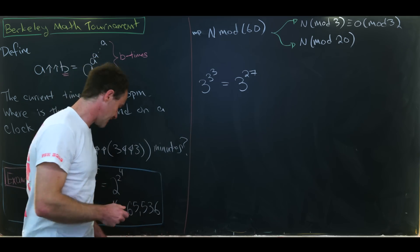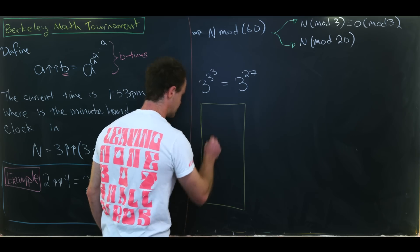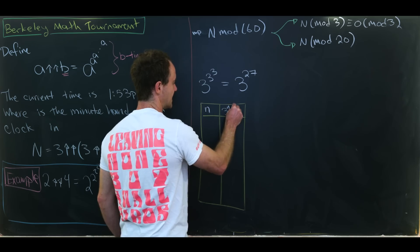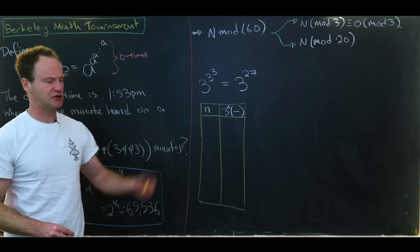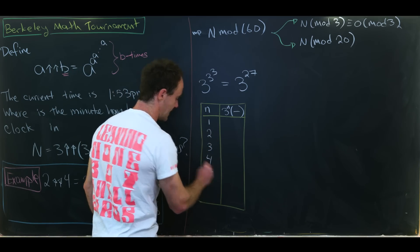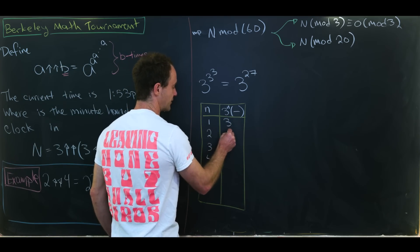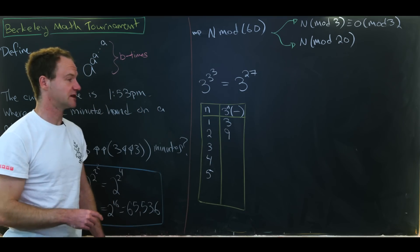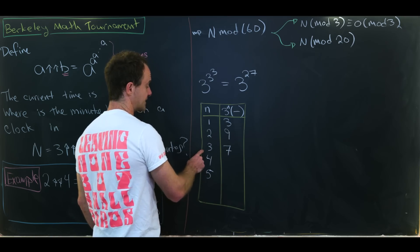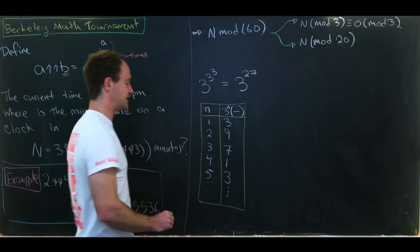And then since we're working mod 20 maybe we should make a quick chart of powers of 3 mod 20. And we expect these to repeat. So let's say here we're taking N and here we're taking 3 to the N mod 20. So we'll take N to be 1, 2, 3, 4, 5. And then I think that'll be enough to see a pattern. So 3 to the 1 is 3. 3 squared is 9. 3 to the 3 is 27, but reducing that mod 20 will give us 7. Then 3 to the 4 is 81, reducing that mod 20 will give us 1. And then we'll have 3 again. And now we start repeating.